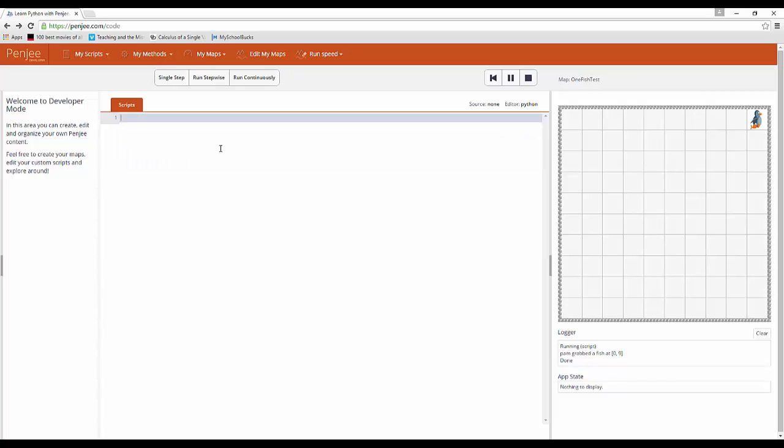However, let's now look at an if statement, if not pam.isfish here, which will execute pam.waddle when there is not a fish at Pam's location once. As you can see, this plays out by Pam only waddling once and grabbing nothing after the if statement executes.